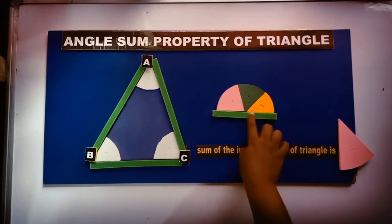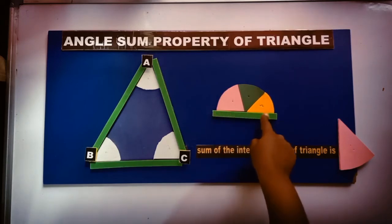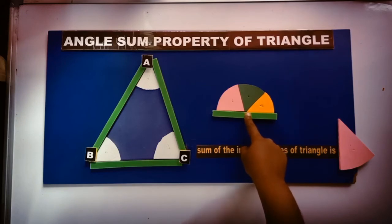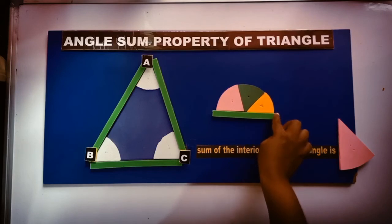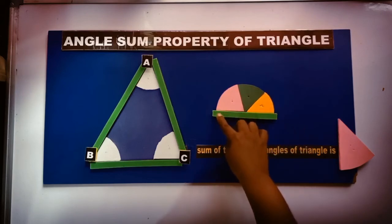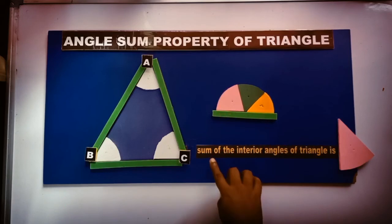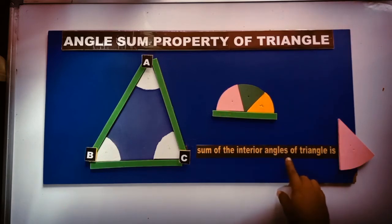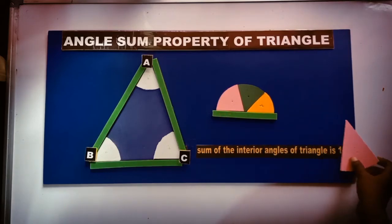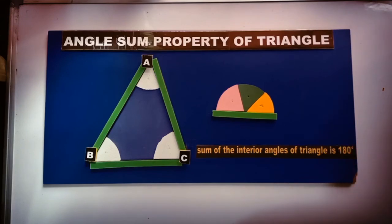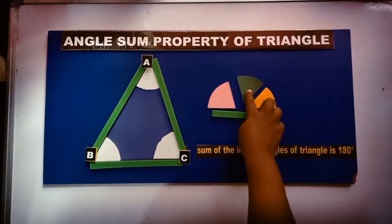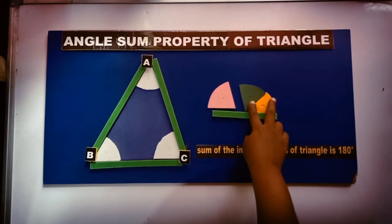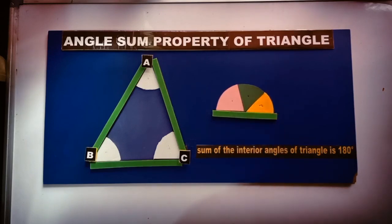If we join three angles of a triangle, it stands on a line. We know that straight angle is 180 degree. Therefore, sum of three angles of a triangle stands on a line. Therefore, sum of three interior angles of a triangle is 180 degree.